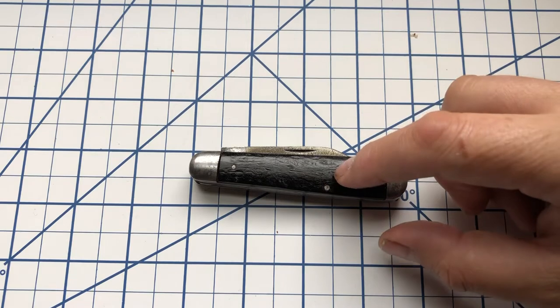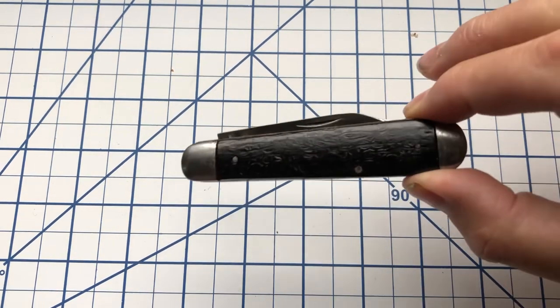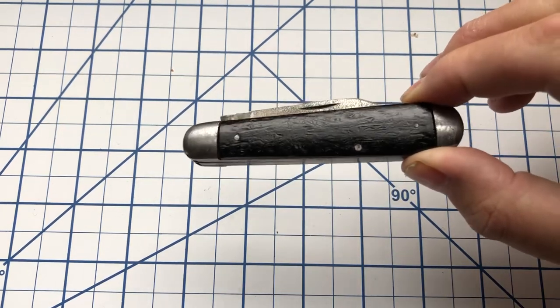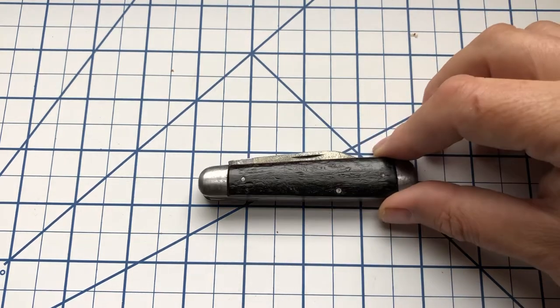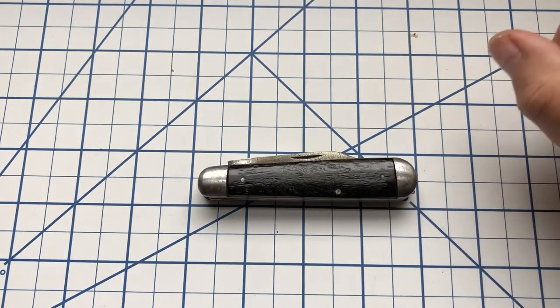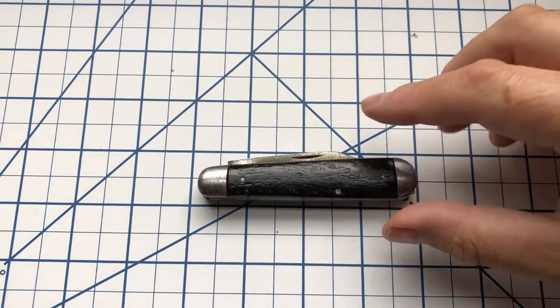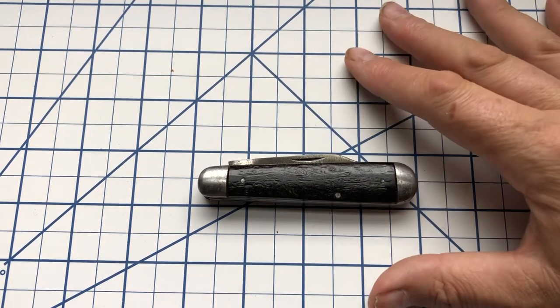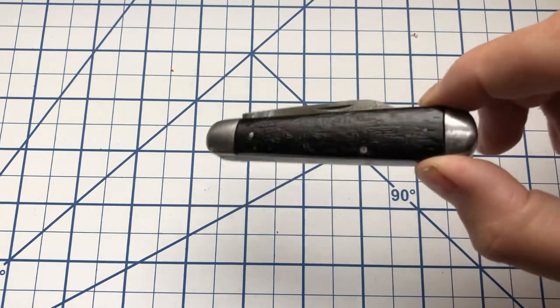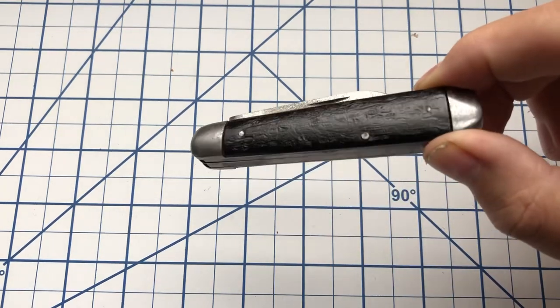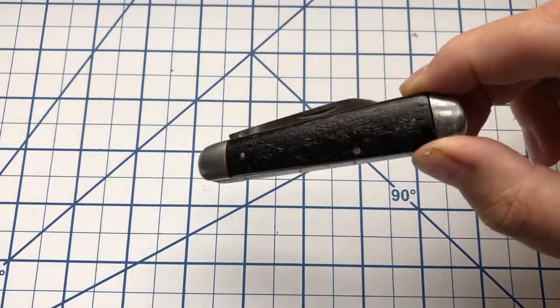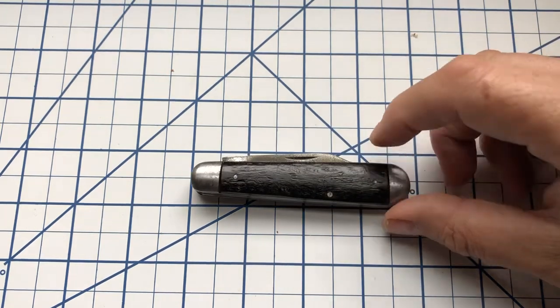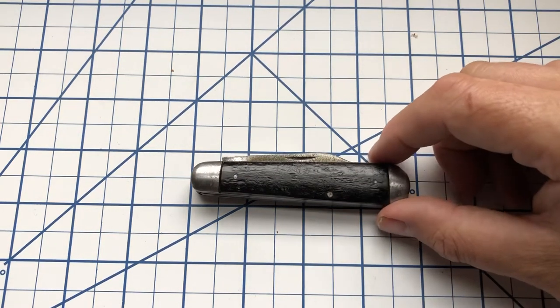Now as I said I believe these handles are Delrin. There is a photo online of one of these old number 10s that talks about it having the original version of the Winterbottom bone. And that knife has bone handles, bone covers. Looks very much like this, but I don't believe this is bone. To me it feels like Delrin.